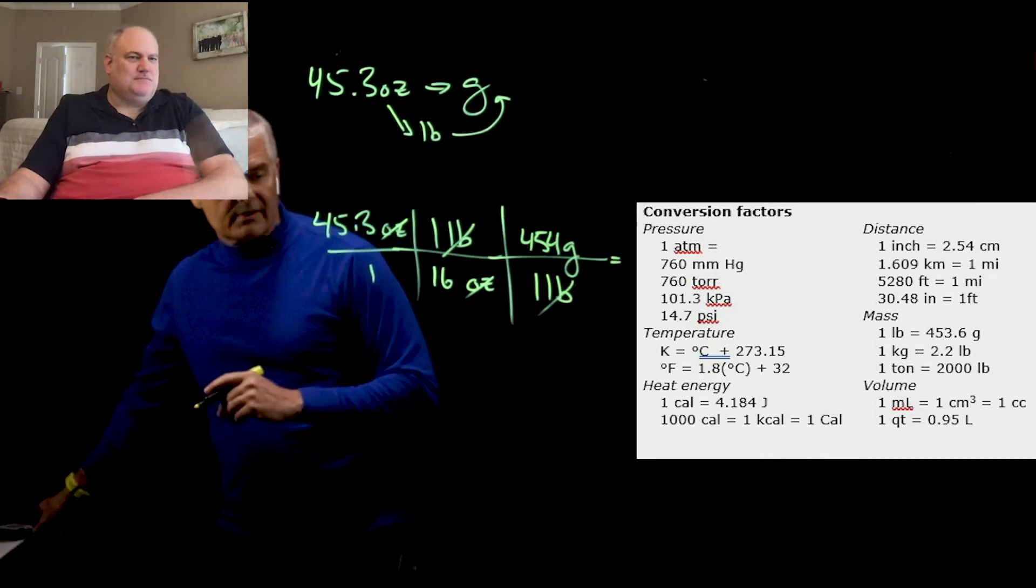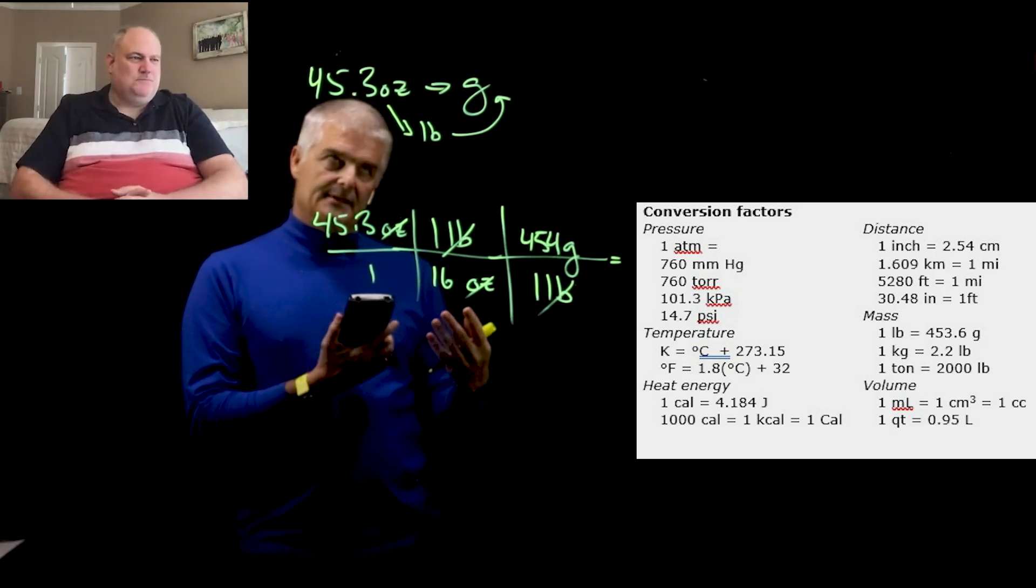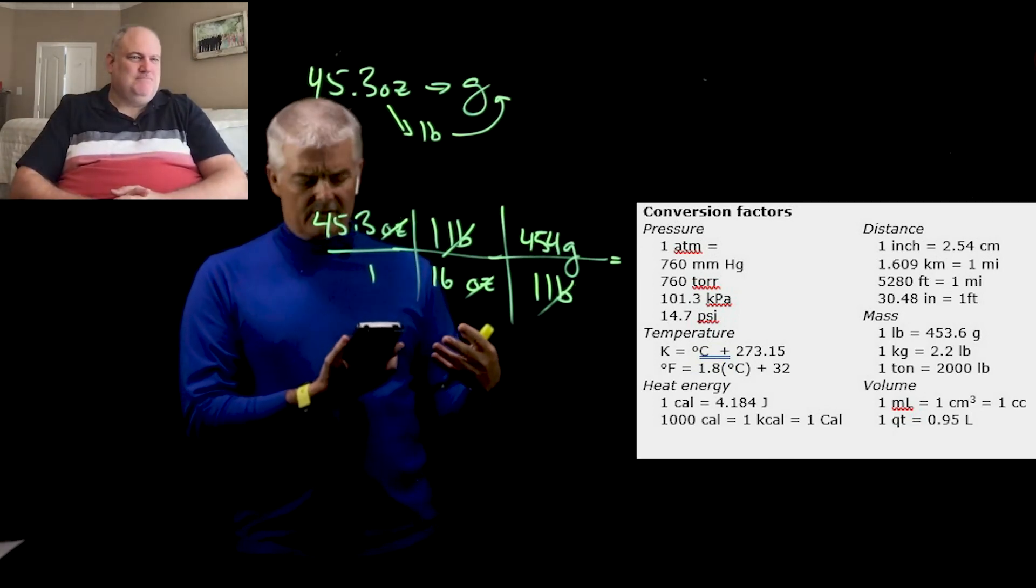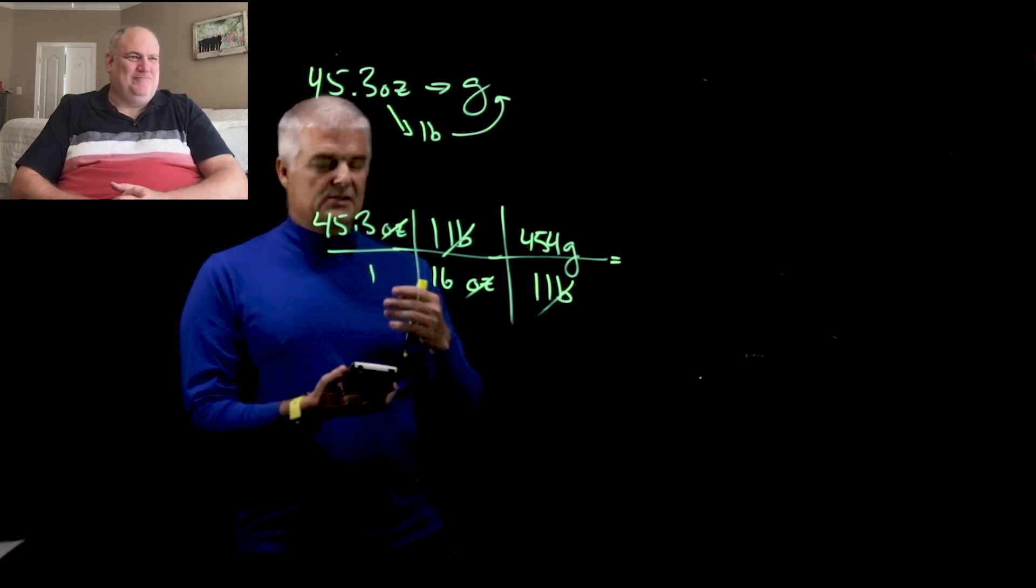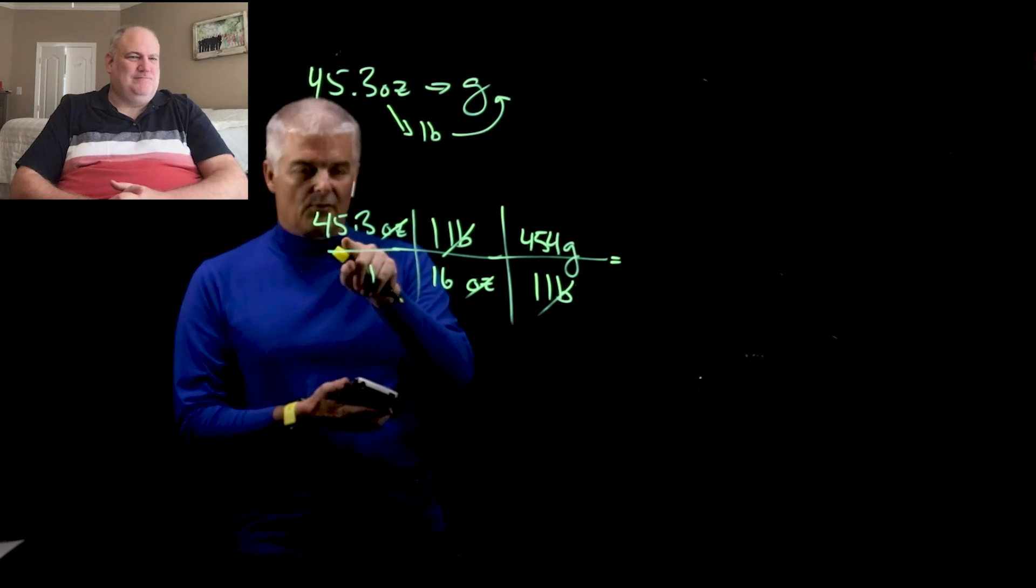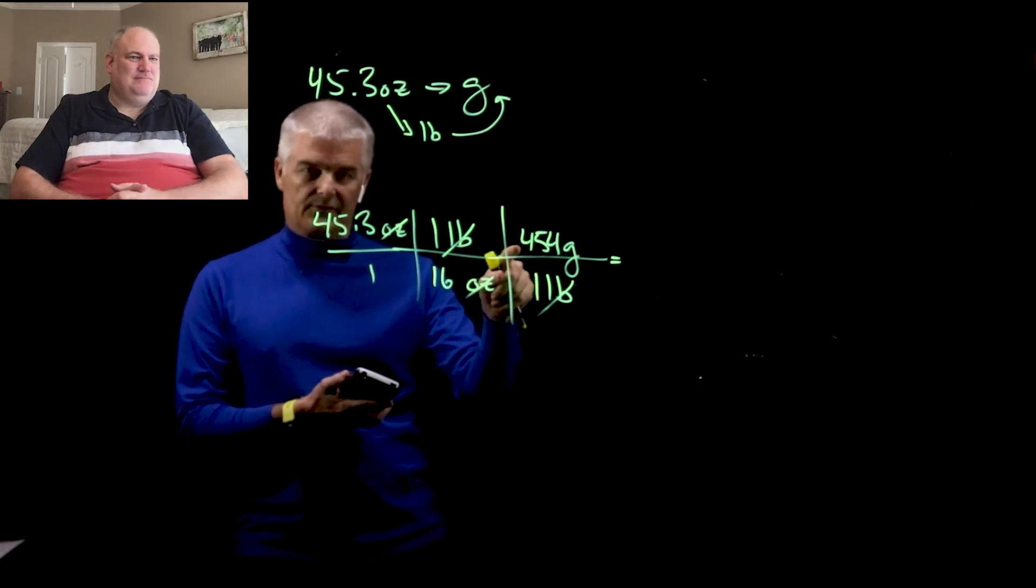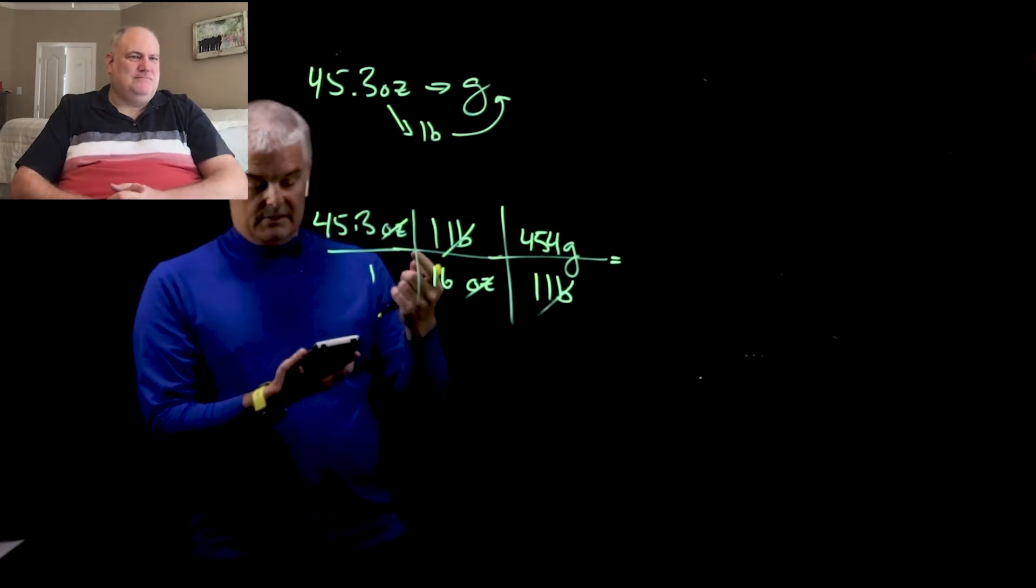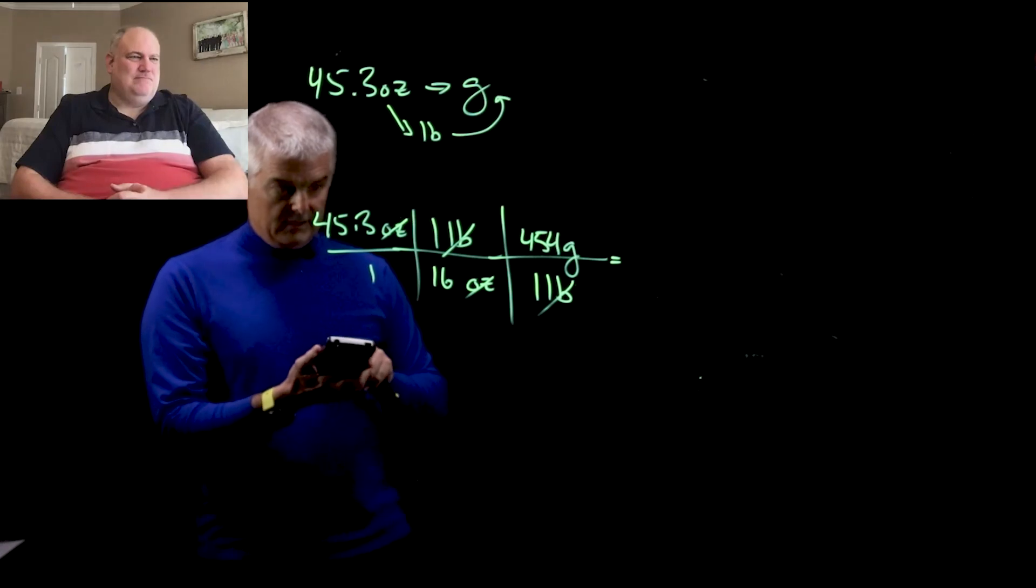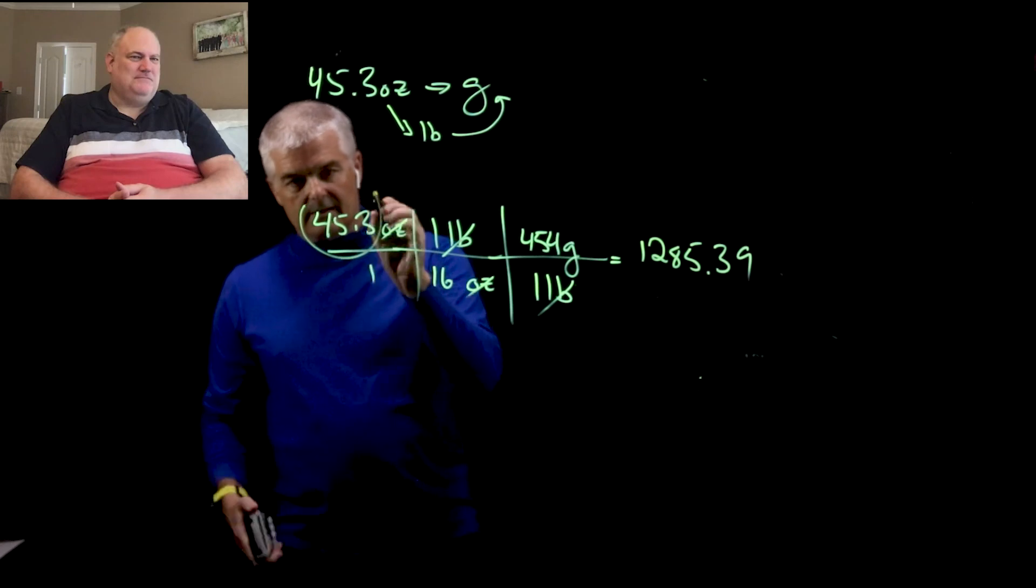Now, this one's a little tricky on the calculator work. Because you have a number on the top, a number on the top, and a number on the bottom. Basically, you can divide. I can type in 45.3 times 454 divided by 16. Or I can just as well take 45.3 divided by 16 times 454. Basically, the rule is, anything on the bottom, divide. If I had five things on the bottom, divide, divide, divide. So, I'm going to do this. 45.3 divided by 16 times 454. And I get the big old number, 1285.39 or something like that.